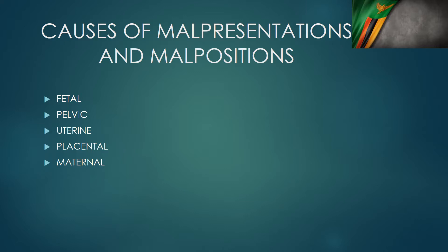These malpresentations and malpositions can be caused by various things. The causes can be fetal — for instance, when we have hydrocephalus there might be a breech presentation because of that fetal anomaly. We might also have pelvic abnormalities, such as a contracted pelvis, which prevents the presenting part of the fetus from entering the pelvis in an appropriate way.